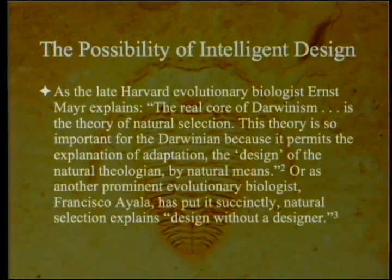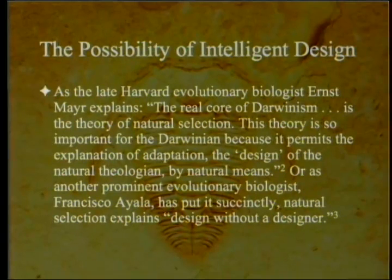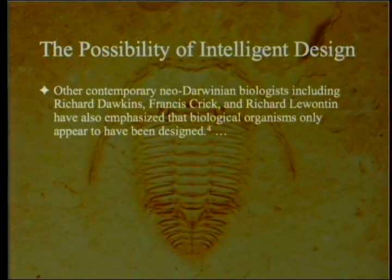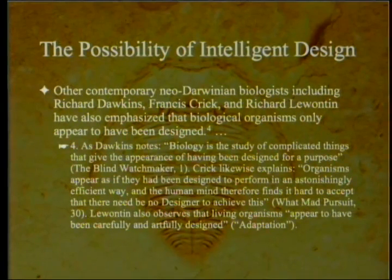As Harvard evolutionary biologist Ernst Mayr explains, the real core of Darwinism is the theory of natural selection, which permits the explanation of adaptation—the design of the natural theologian—by natural means. As another prominent evolutionary biologist Francisco Ayala has put it succinctly, natural selection explains design without a designer. Other neo-Darwinian biologists, including Richard Dawkins, Francis Crick, and Richard Lewontin, have also emphasized that biological organisms only appear to have been designed. As Dawkins notes, biology is the study of complicated things that give the appearance of having been designed for a purpose.